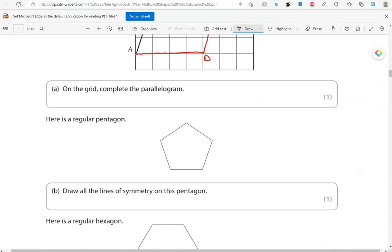Here is a regular pentagon. Draw all the lines of symmetry on this pentagon. So, regular shapes, they have the same number of lines of symmetry as the number of sides. So, a regular pentagon has five sides, so it has five lines of symmetry. There is 1, 2, 3, 4, 5.